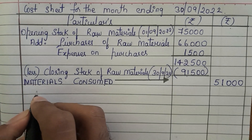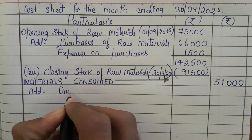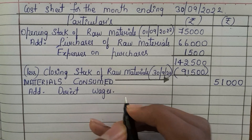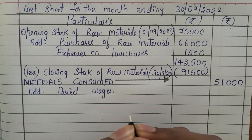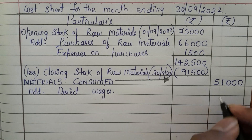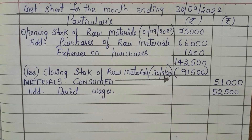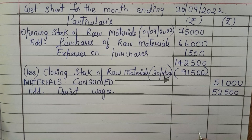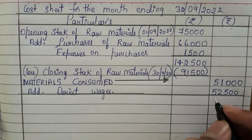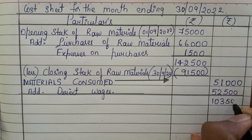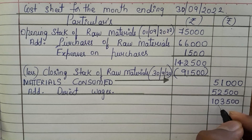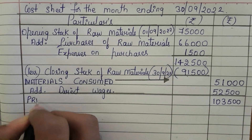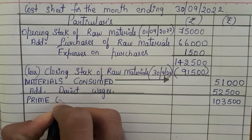For this materials consumed, you need to add direct wages. The direct wages in the question are 52,500. Add 51,000 plus 52,500 and you will get 1,03,500. This 1,03,500 is nothing but our prime cost.